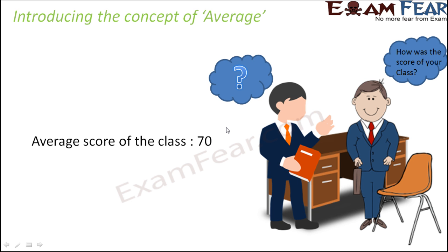When the average score of the class is 70, the principal gets an idea about the overall performance of the class. So even though he doesn't get to know who scored 50 and who scored 90, at least he gets to know that overall this class is performing average — meaning there are certain students who are not scoring that well, but at the same time there are certain students doing very well. Had the average score been 30 instead of 70, that would have very clearly conveyed a message to the principal that most of the students in the class are performing badly. So the average score helps to give a broader view of the scores of so many students in the class — and this is where we introduce the concept of average.